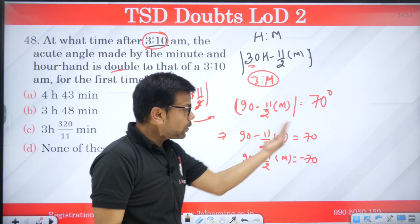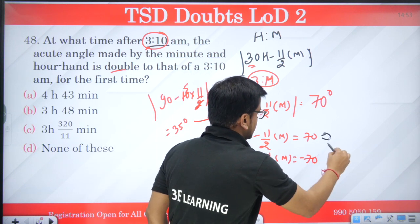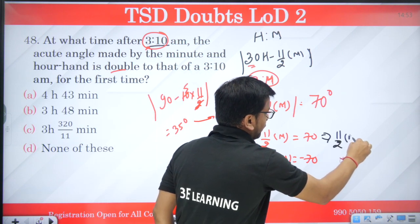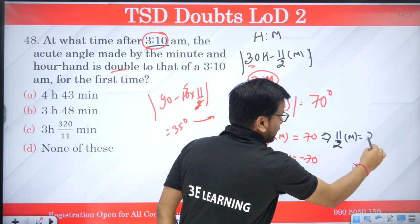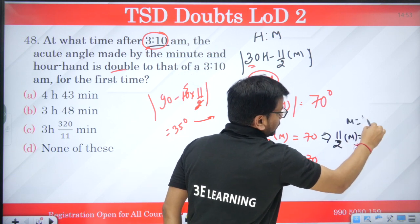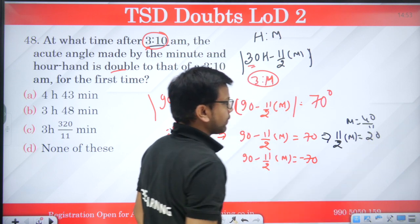So I will take this here and take this one. So this becomes 11 by 2 m is 20. So m becomes 40 by 11.